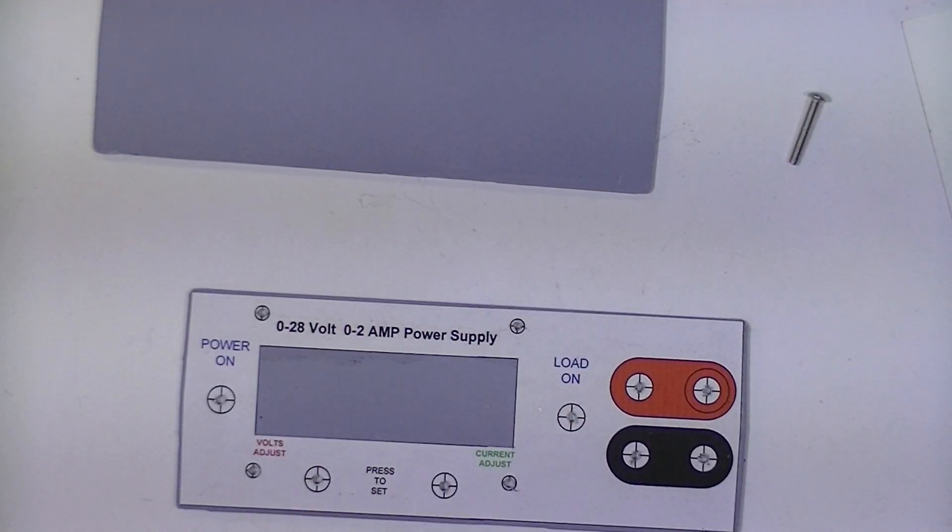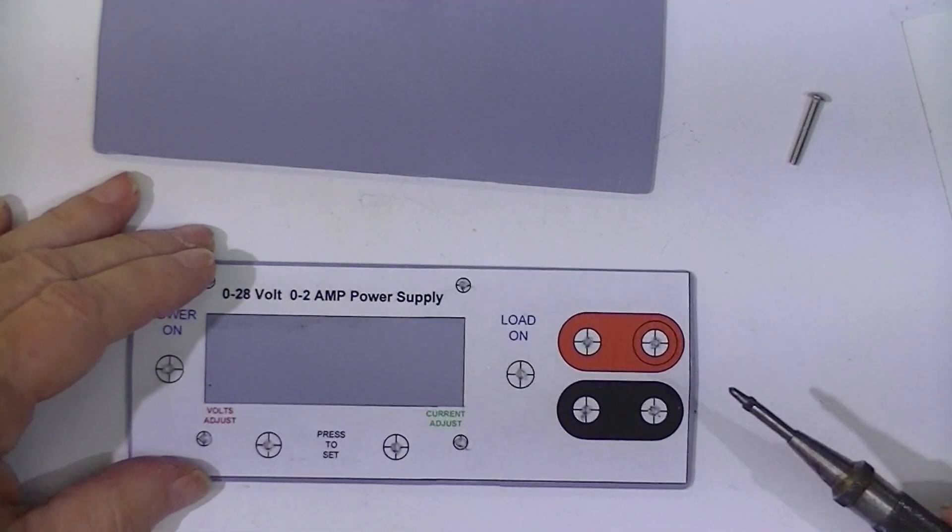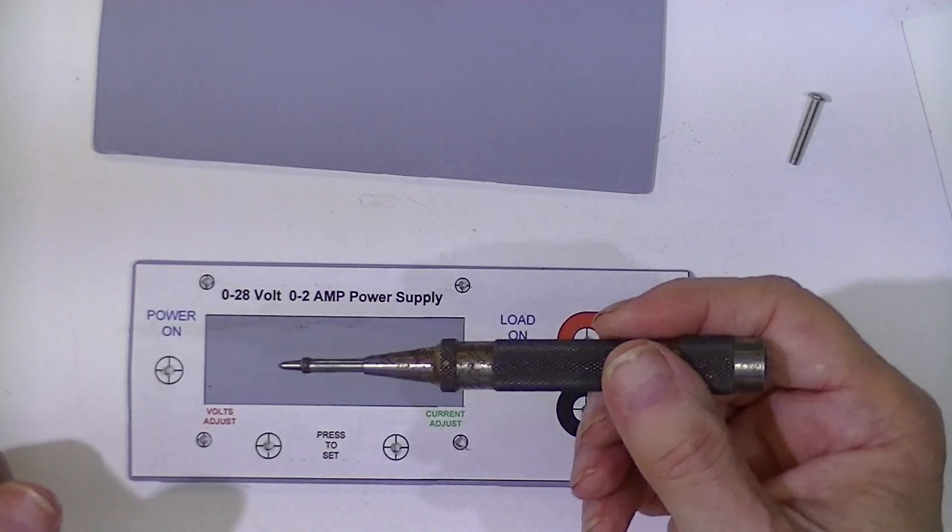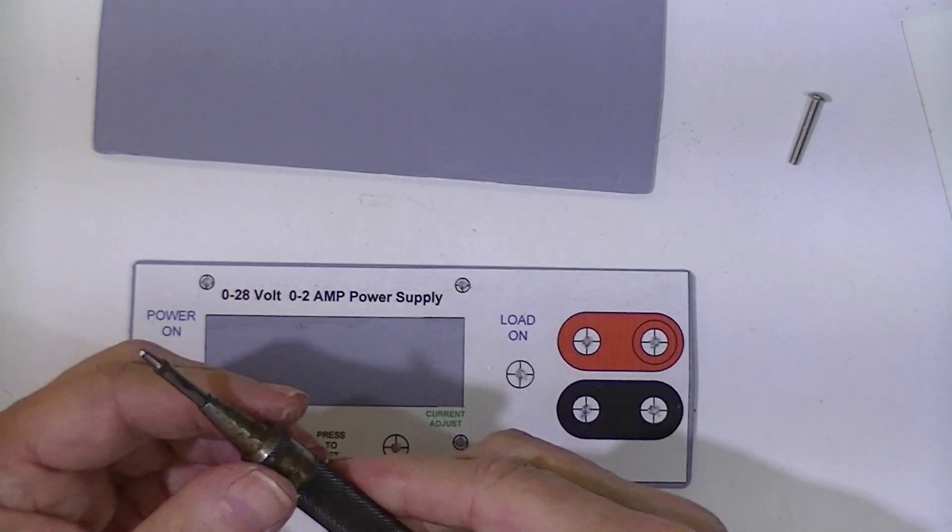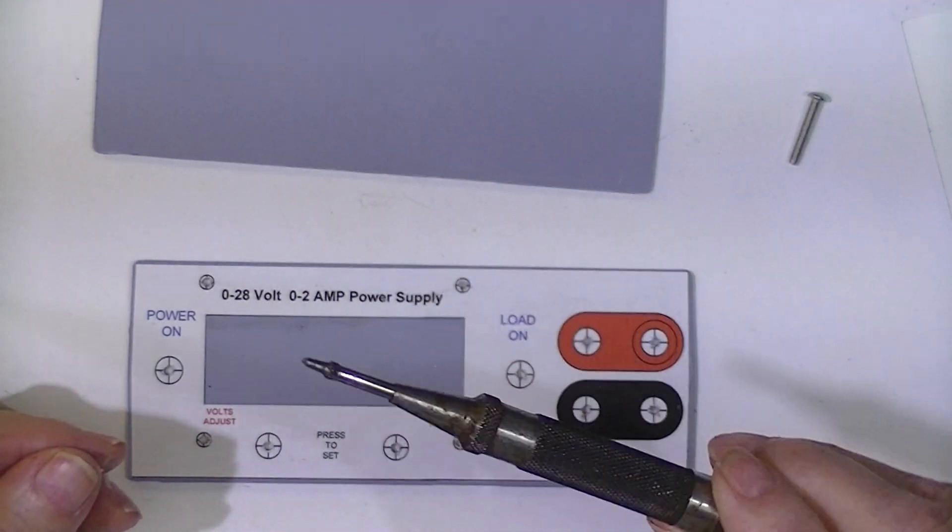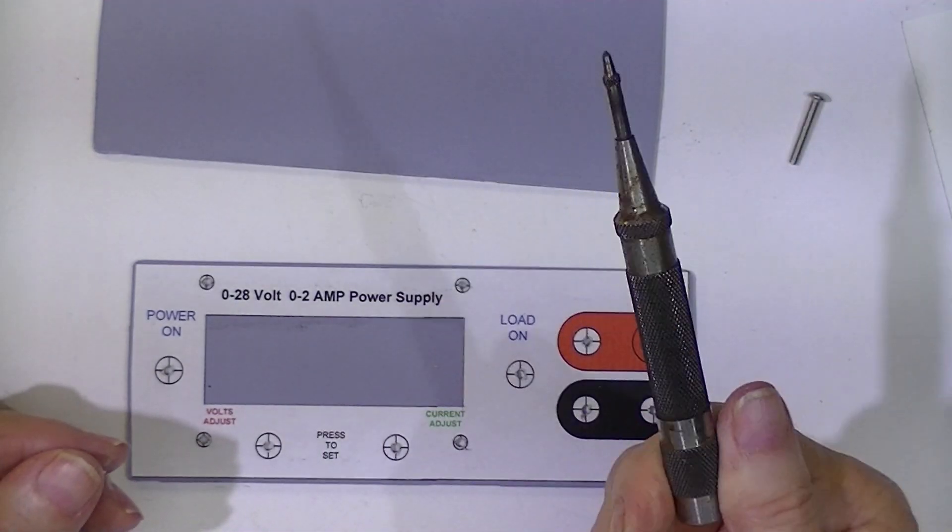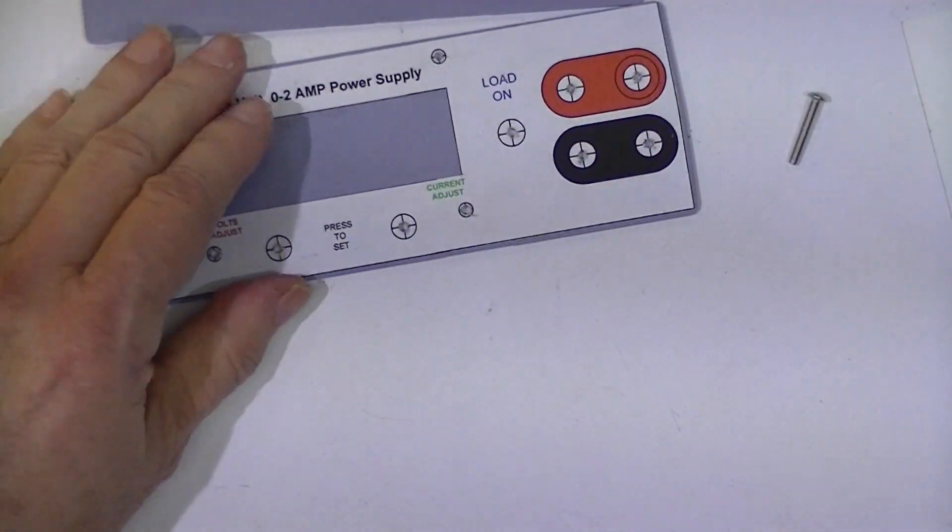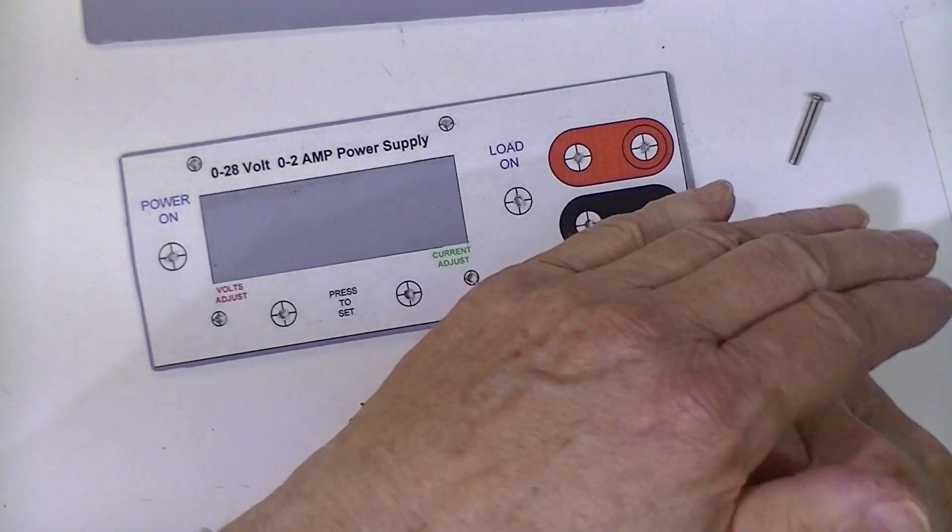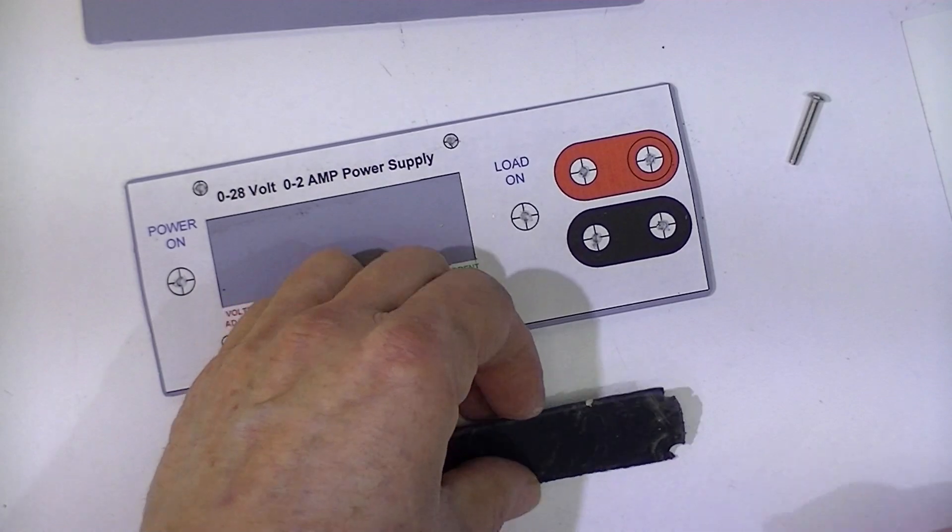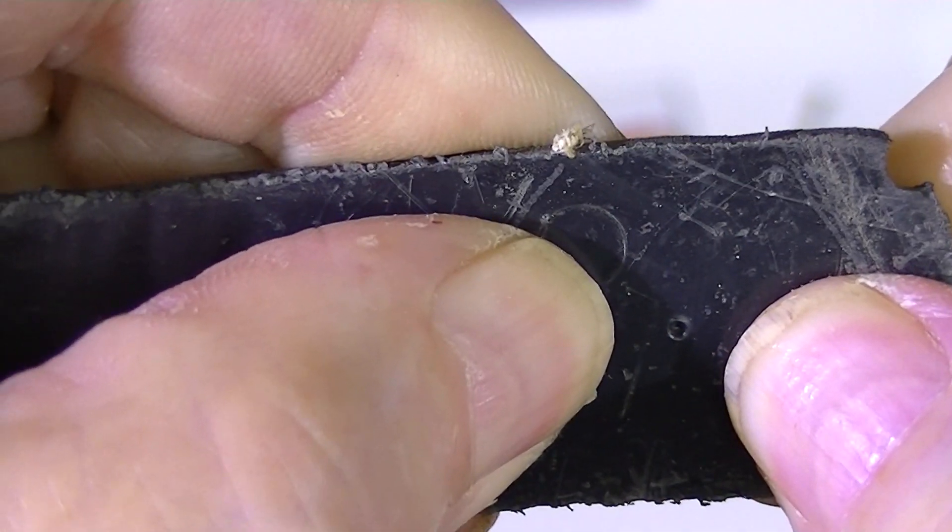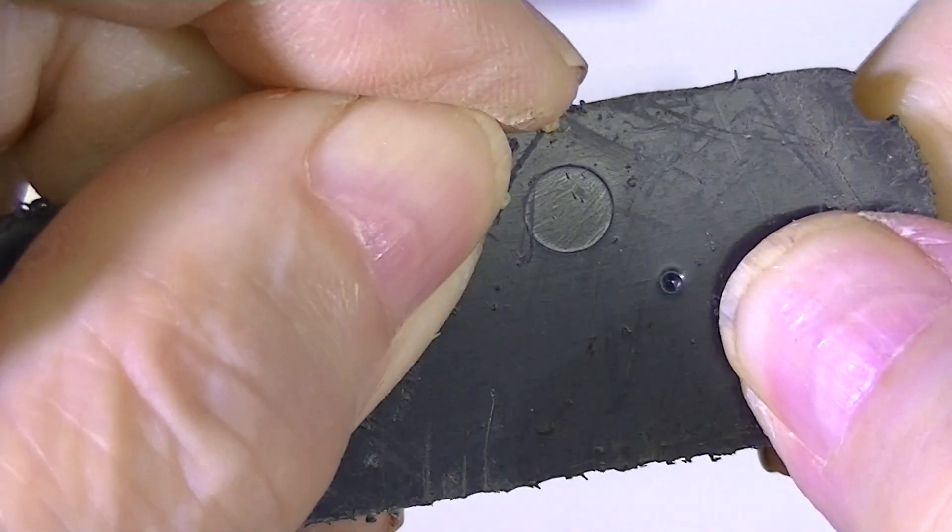Now then I take an automatic center punch. You can buy these on Banggood and eBay from China. This one is a Starrett but they do make these automatic punches for like three dollars. I guess I should show you how it works. I very carefully put this point in the center of the X and then bang. It makes, if we can see that, a tiny little dent.